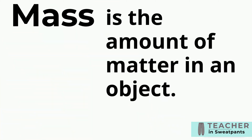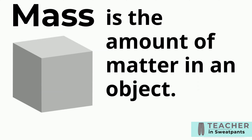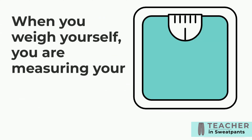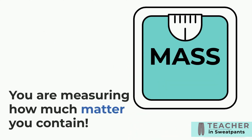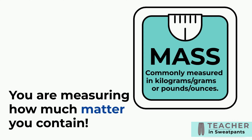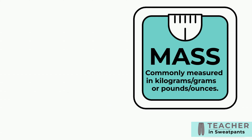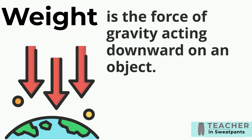Mass is the amount of matter in an object. When you weigh yourself, you are measuring your mass — how much matter you contain. It is commonly measured in kilograms and grams, or pounds and ounces.